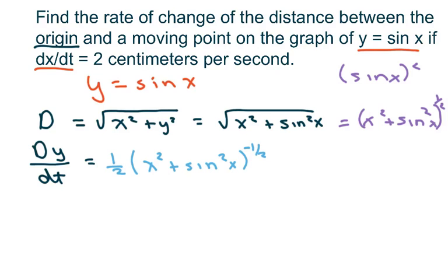plus sine x squared to the negative one half times the derivative of the inner function. The derivative of the inner function is going to be 2x, and the derivative of this one is going to be plus 2 times sine x, and then times the derivative of sine of x, which is cosine of x.